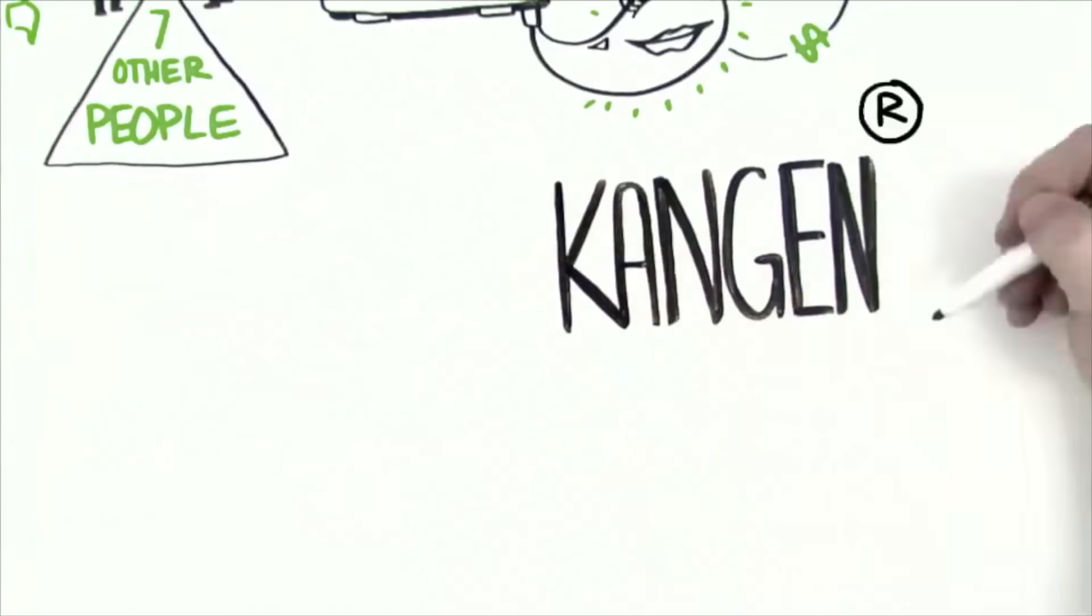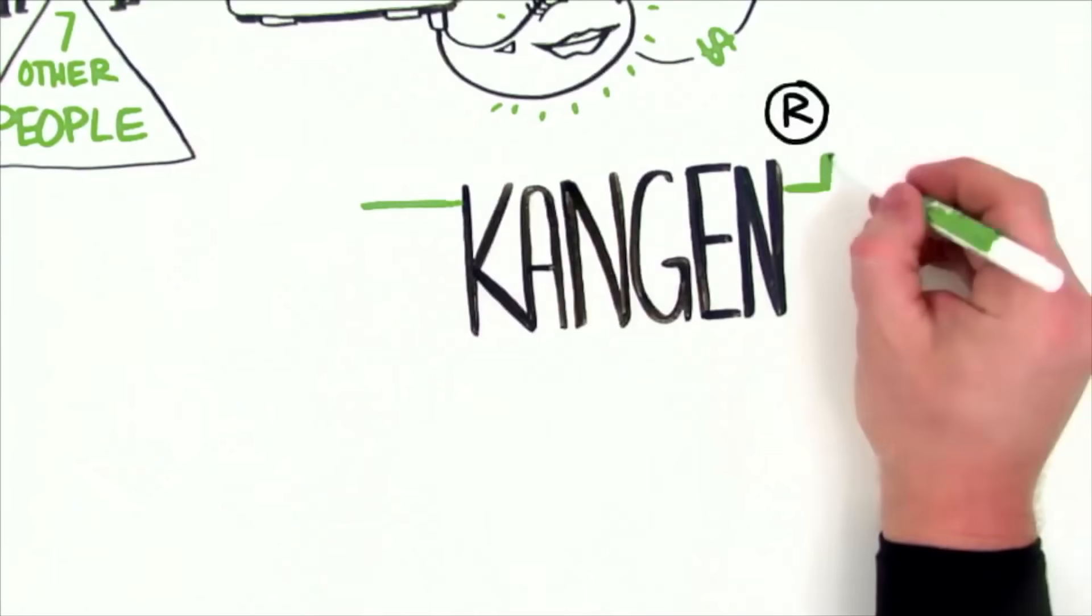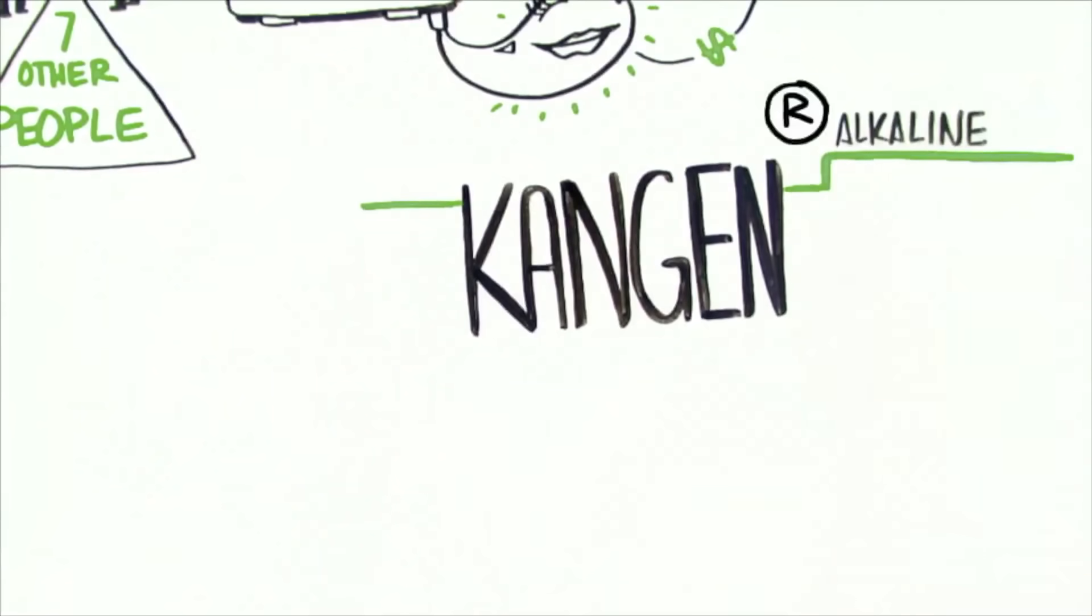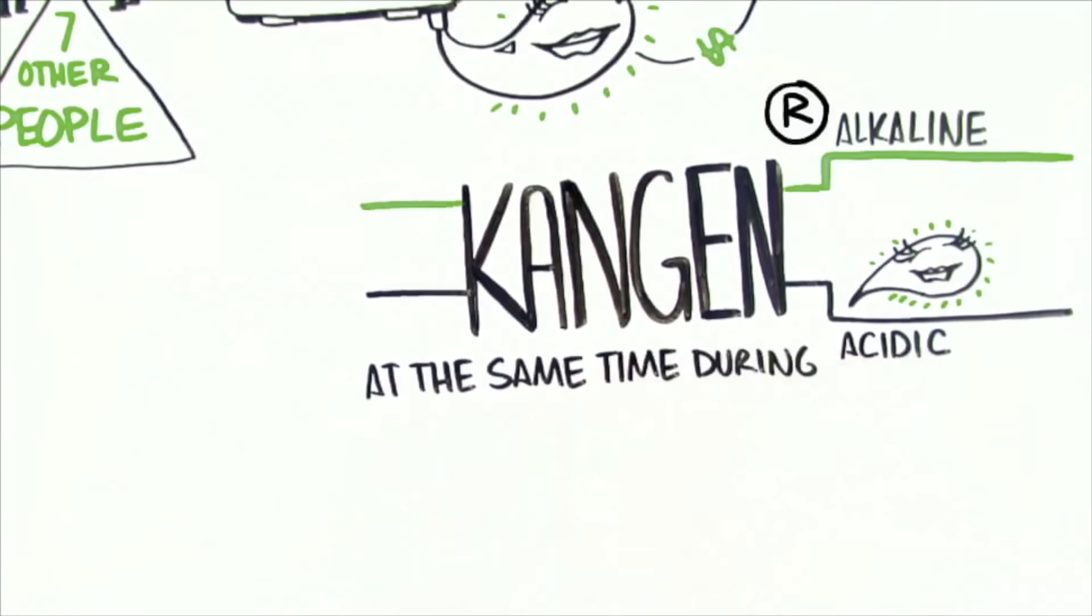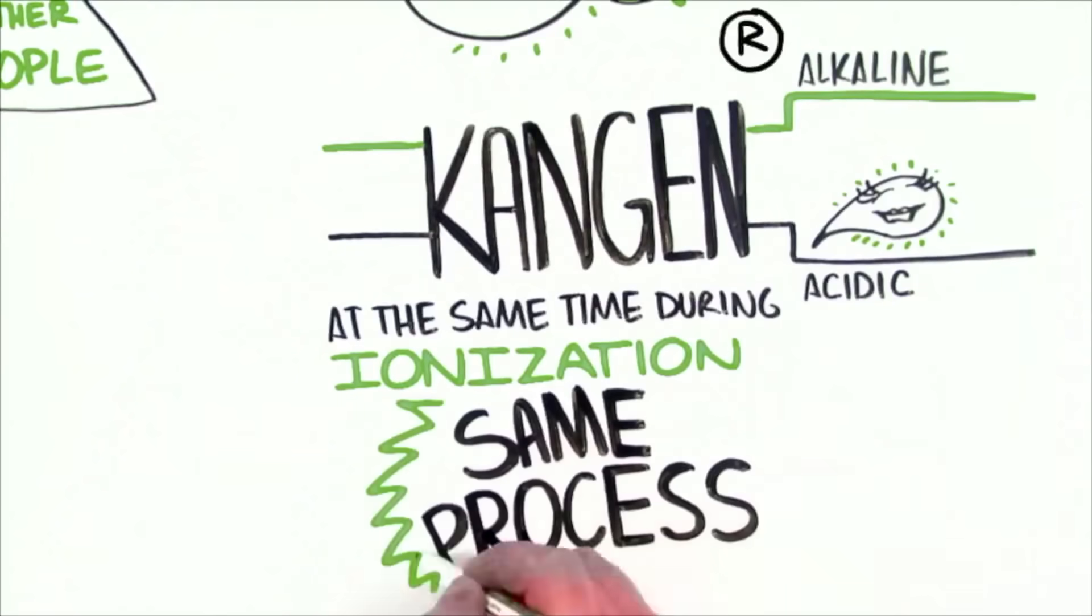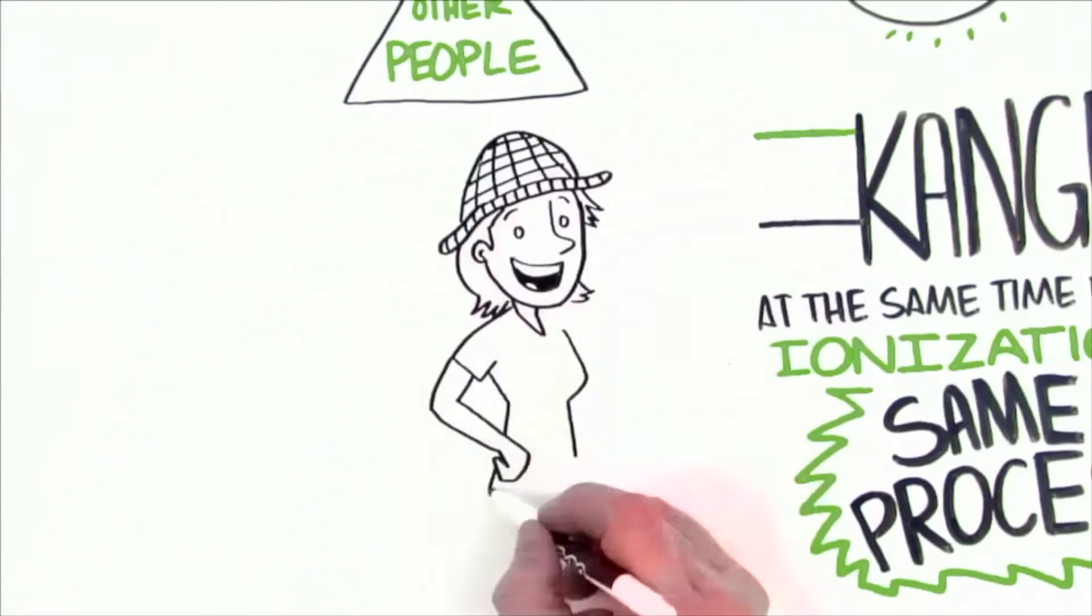Clever as those marketing terms may be, Kangen Water is alkaline ionized water made by a water ionizer, and that beauty water is acidic water that's created at the same time as the alkaline water during ionization. It's the same process. Now you have it. You've solved the case.